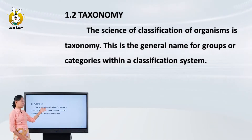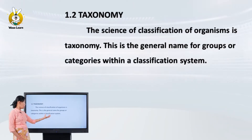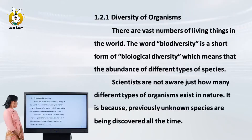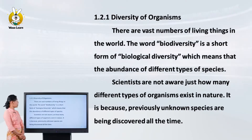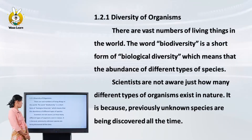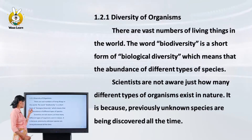A taxon is a general name for a group or category within a classification system. The study of the diversity of organisms refers to biodiversity — the best estimate of the number of living things in the world. The word biodiversity is a short form of biological diversity, which means the abundance of different types of species.